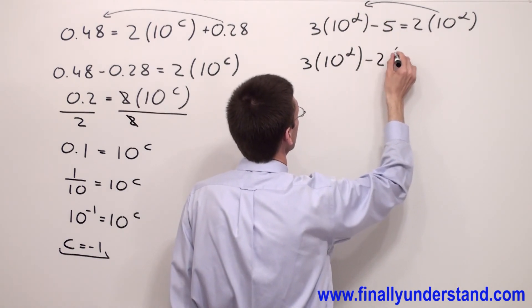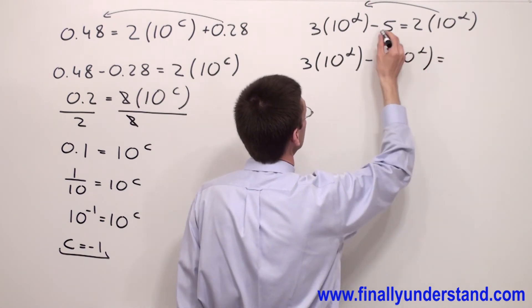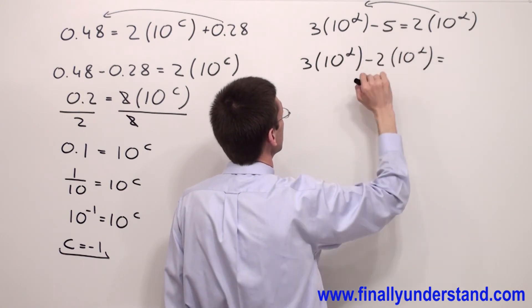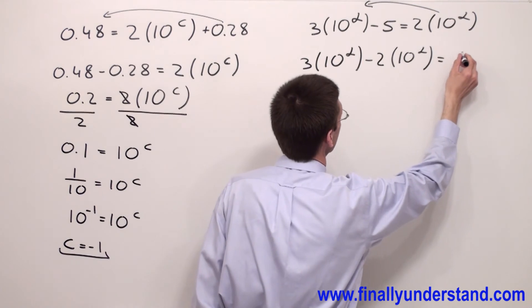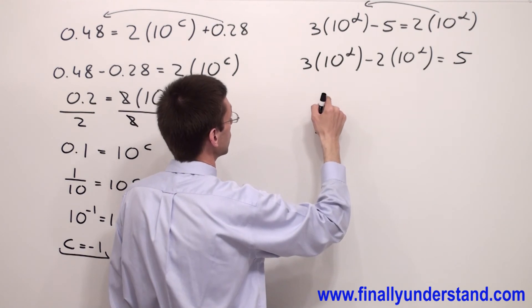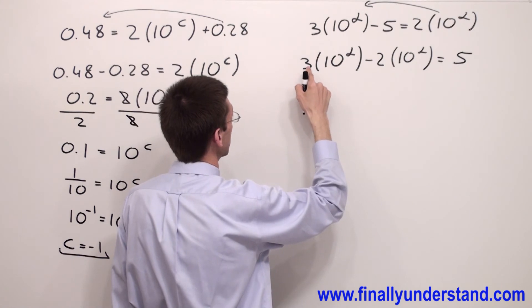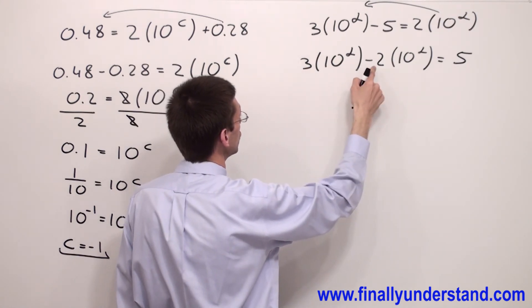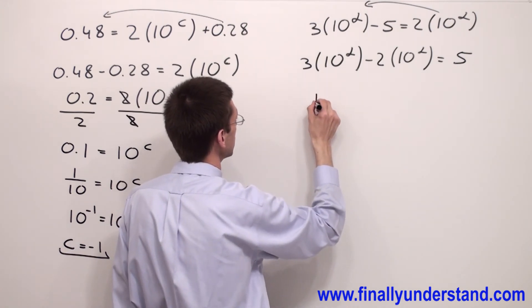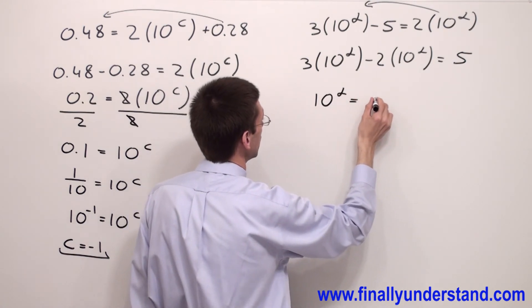Equals, and I have to move negative 5 to the right side because negative 5 has no alpha next to itself, equals 5. Now I'm supposed to combine the like terms and I have 10 alpha and 10 alpha, so simply subtract 3 minus 2 equals 1. So 1 times 10 alpha is just 10 alpha equals 5.